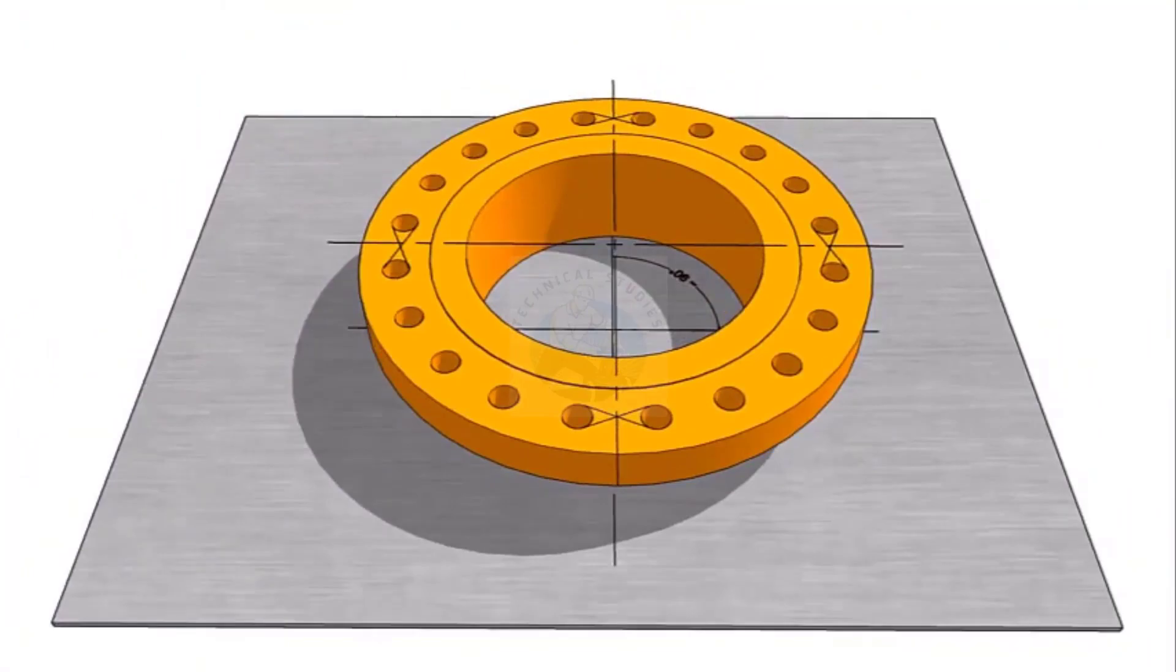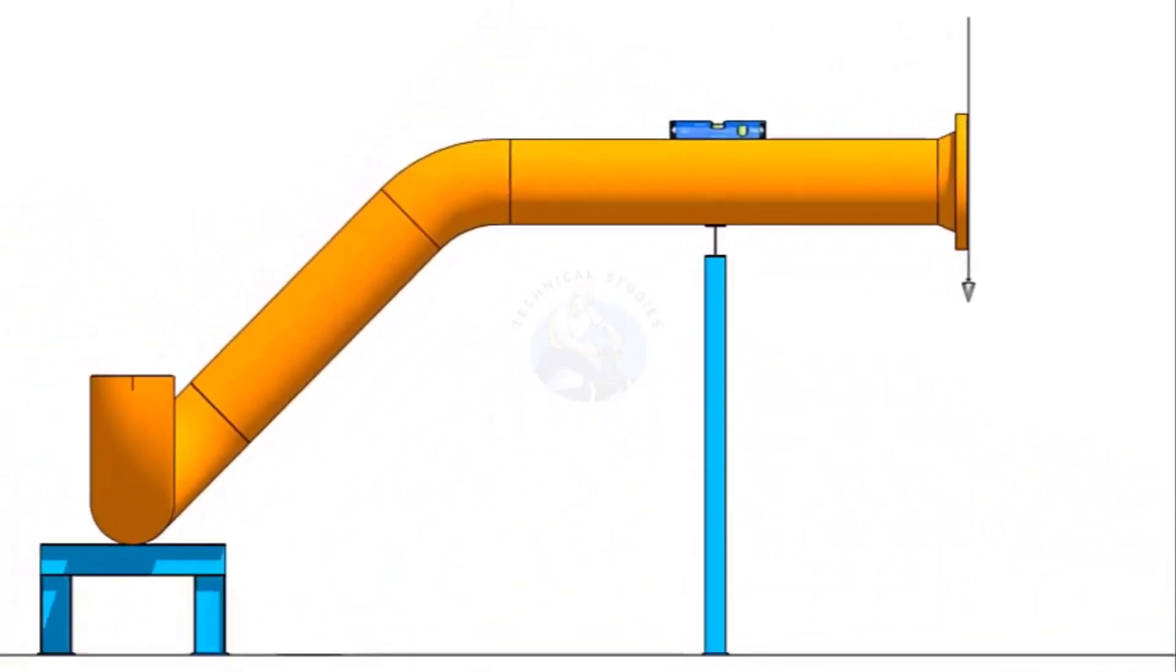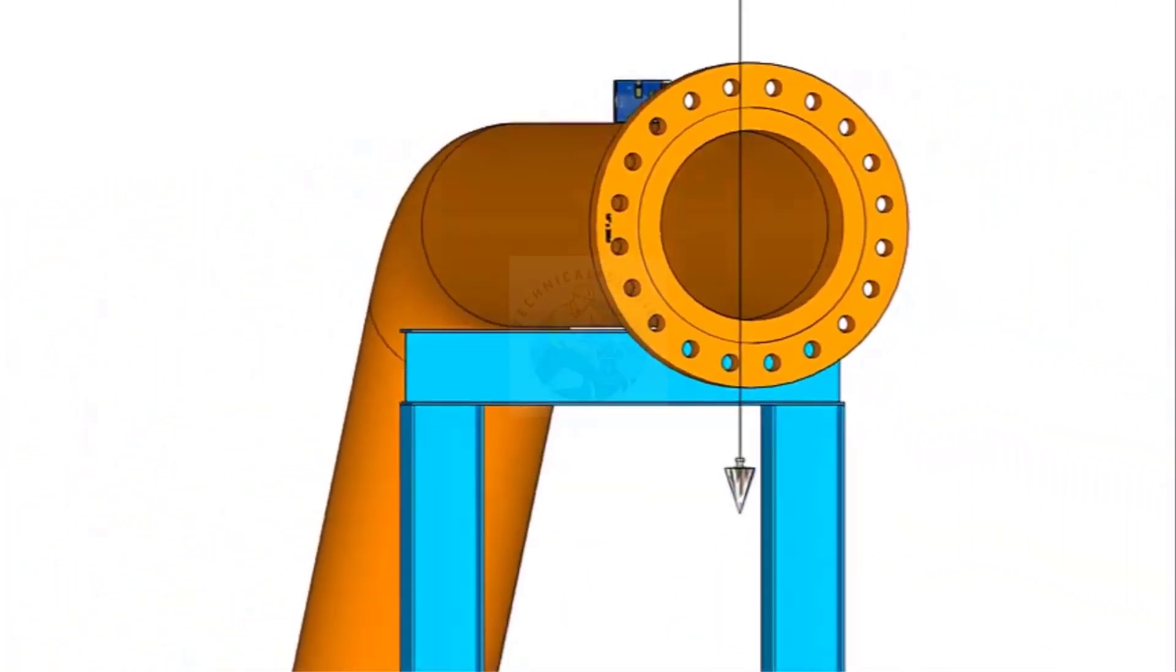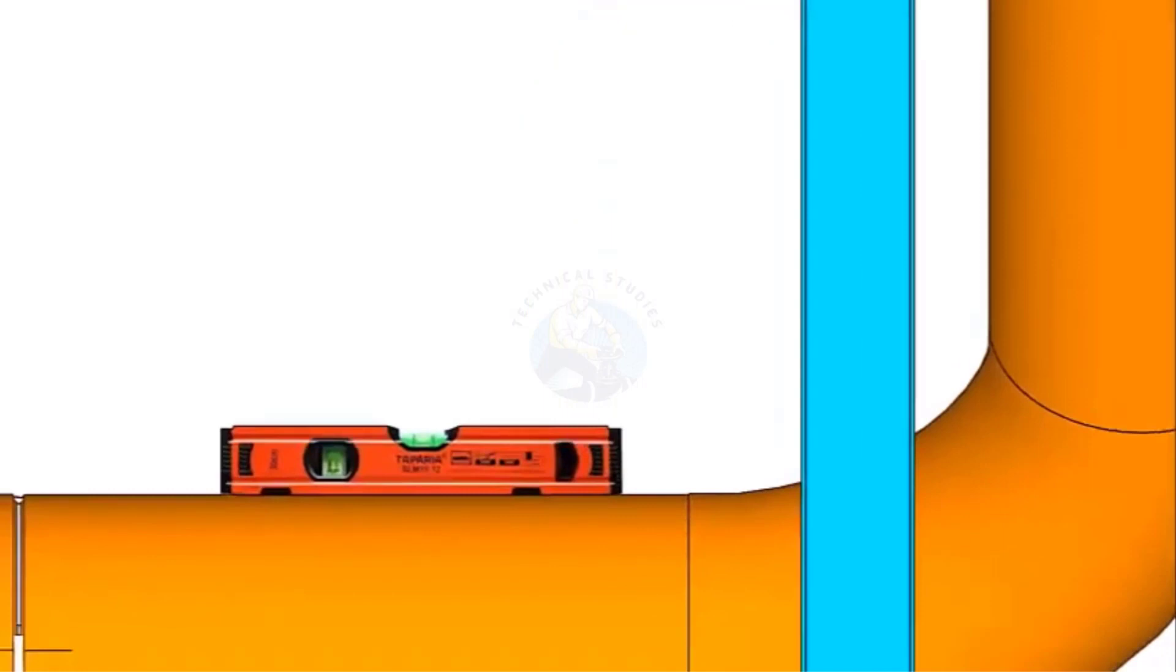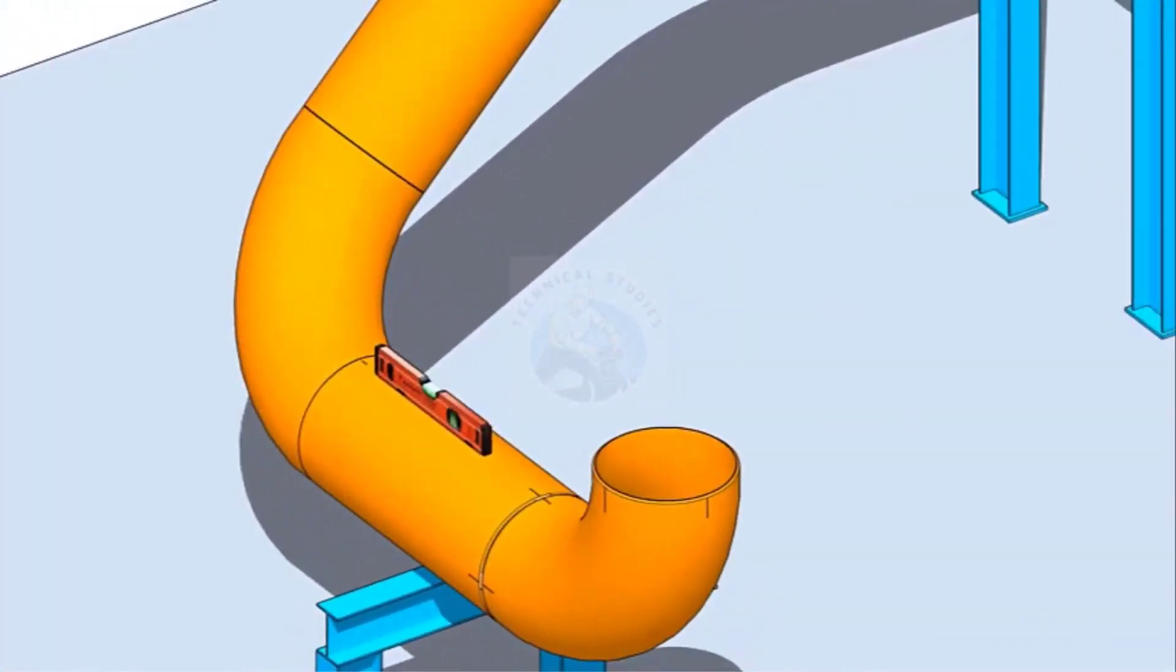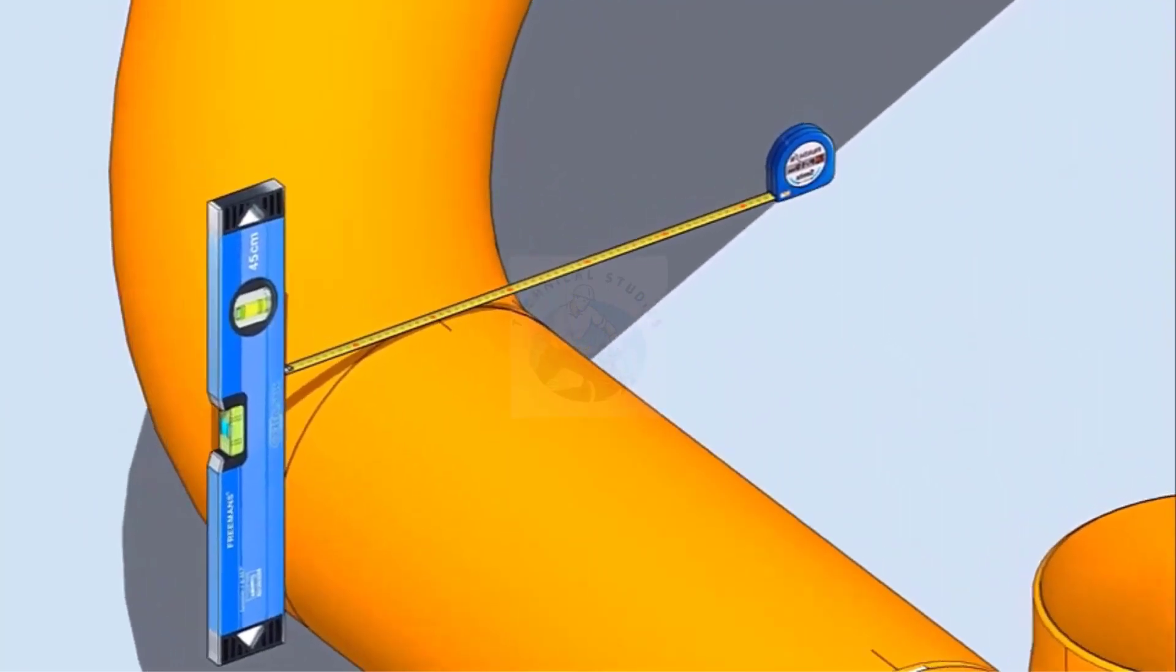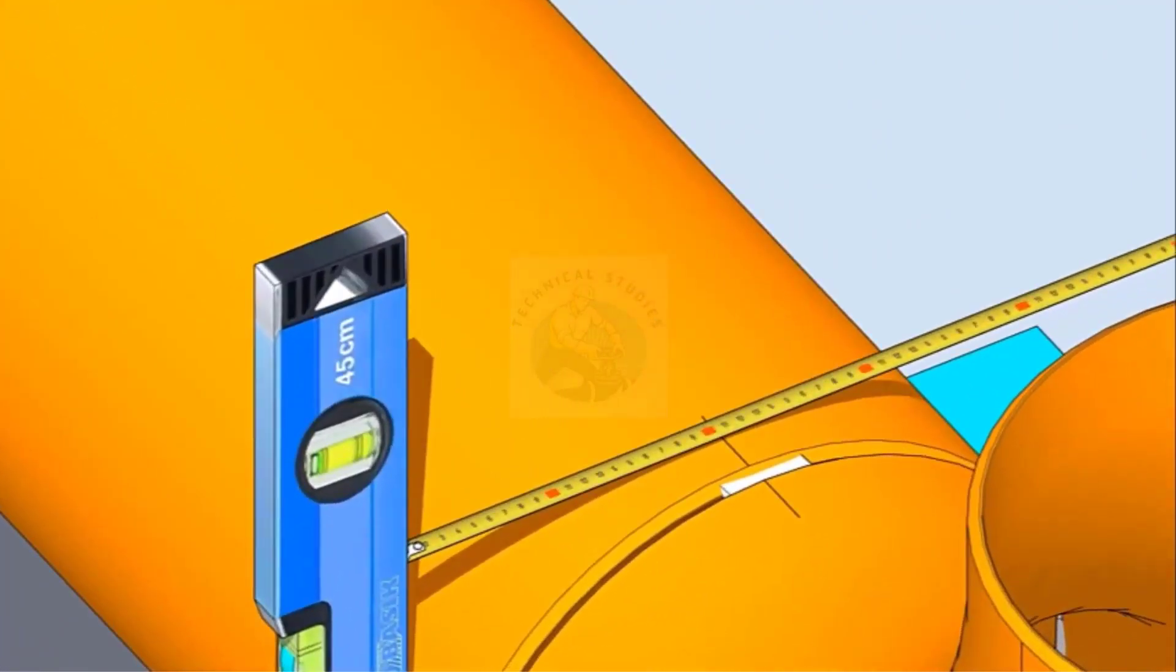Let us check the level of the existing spool. Hold a spirit level vertically, touching the side of the pipe, and mark half OD on the top of the pipe. Cross-check this mark from the opposite side also, following the same method.